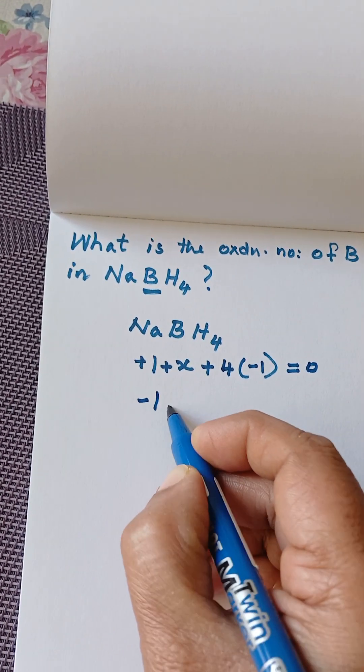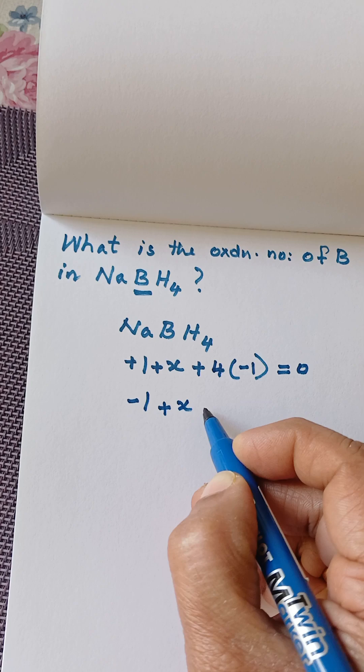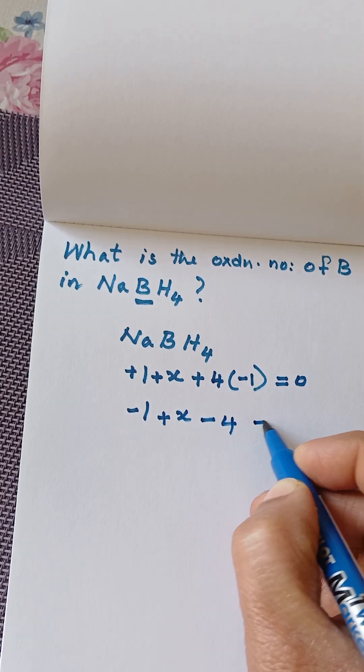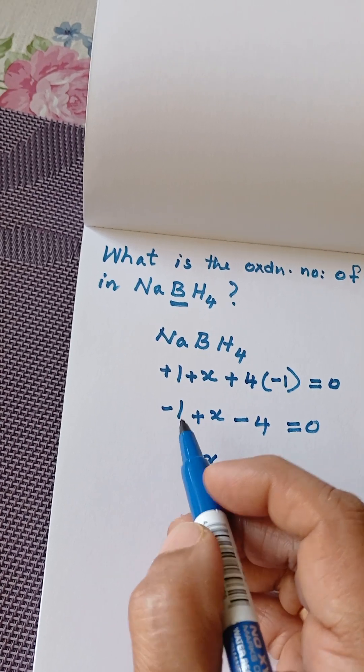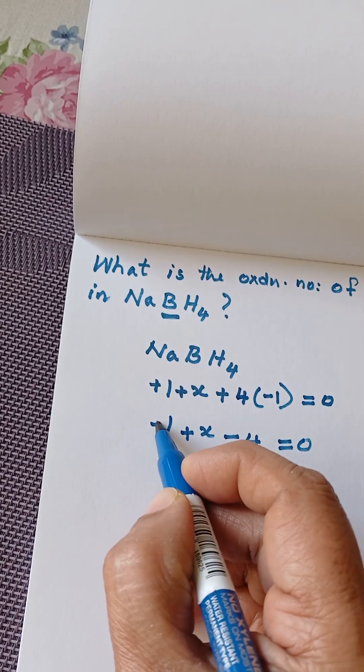So minus 1 plus X minus 4 equal to 0. X is equal to... sorry this is plus 1.